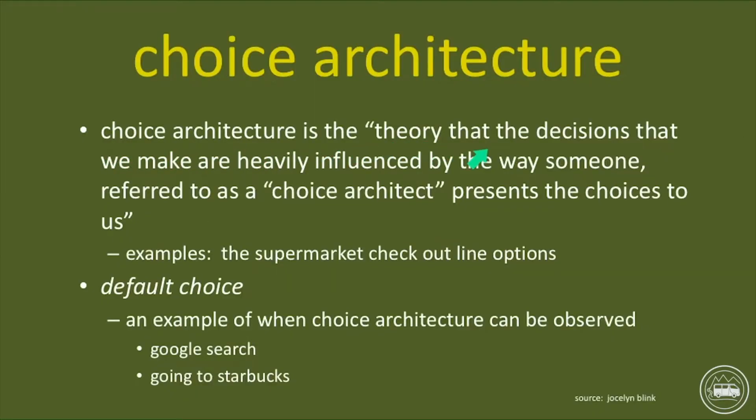Let's take a look at another concept in behavioral economics called choice architecture. This is really interesting because there actually are these creatures out there called choice architects. An architect designs a structure — choice architects design a structure upon which people make choices. Choice architecture really influences a lot of the ways in which we make our economic decisions. Choice architecture is the theory that the decisions we make are heavily influenced by the way someone — referred to as a choice architect — presents the choices to us.